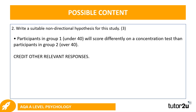Here is the correct answer the mark scheme provided: 'Participants in group one who are the under-40s will score differently on a concentration test than participants in group two over 40.' You can see all three elements: group one (under 40s), group two (over 40s), and the DV in operationalized form — not just 'concentration' but that they will 'score differently on a concentration test.' It's non-directional because we haven't said whether they will score better or worse.